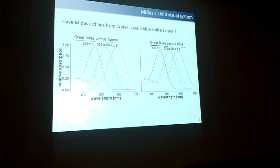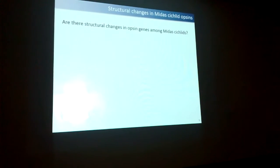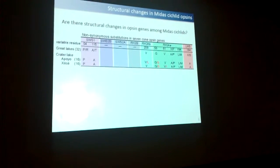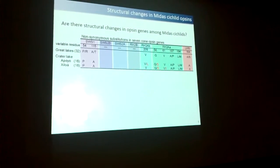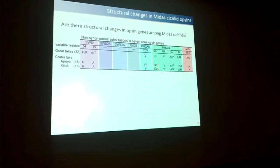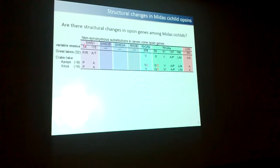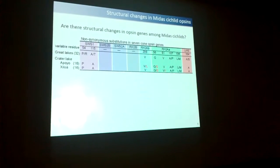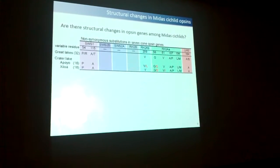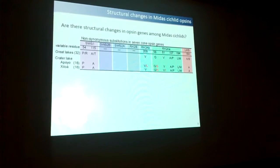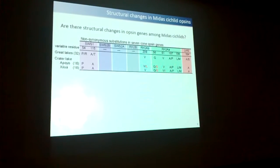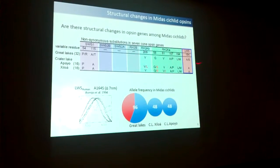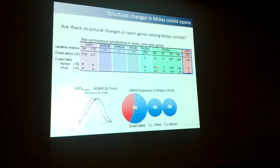I then asked whether there are structural changes in the opsin genes among Midas cichlids. I sequenced the full opsins for Midas cichlids — they have seven different opsins, from SWS1 to long-wave sensitivities, as in African cichlids. Each protein is more or less 350 amino acids. I found only eight variable sites across the seven genes — roughly one amino acid per protein — which is not that much. And more importantly, only one of those variable sites is known to produce any effect on visual tuning.